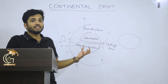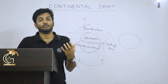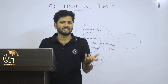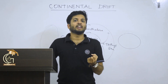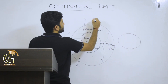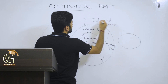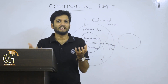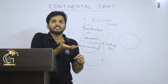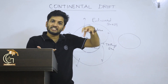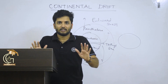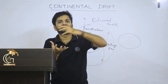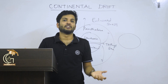Alfred Wegener took help of Edward Suess's theory of SIAL and SIMA. SIAL means the continental crustal portion and SIMA is the oceanic crustal portion. So it is SIAL which moves over SIMA — the continental crustal portion moving over the oceanic crustal portion — which results in drifting of the continents.